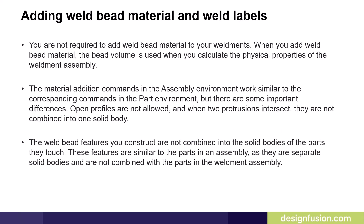You are not required to add weld bead material to your weldments. When you add weld bead material, the bead volume is used when you calculate the physical properties of the weldment assembly. The material addition commands in the assembly environment work similar to the corresponding commands in the part environment, but there are some important differences: open profiles are not allowed, and when two protrusions intersect, they are not combined into one single body. The weld bead features you construct are not combined into solid bodies of the parts they touch. These features are similar to parts in an assembly as they are separate solid bodies and not combined with the parts in the weldment assembly.